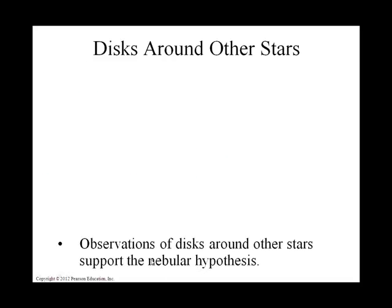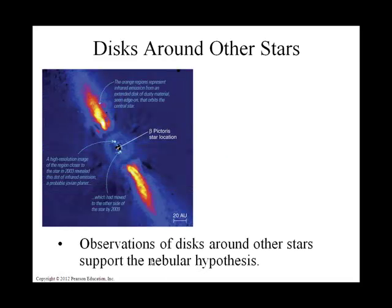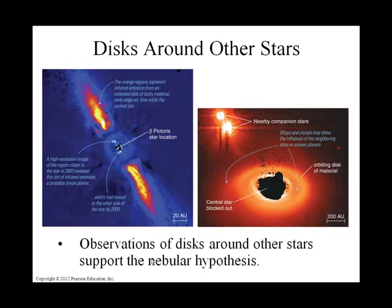Here are images of other protostars with protoplanetary disks around them — they're star wannabes, in the process of being born. There are many stars out there that have planet systems in orbit about them, and here we're catching the process just as it's starting out.